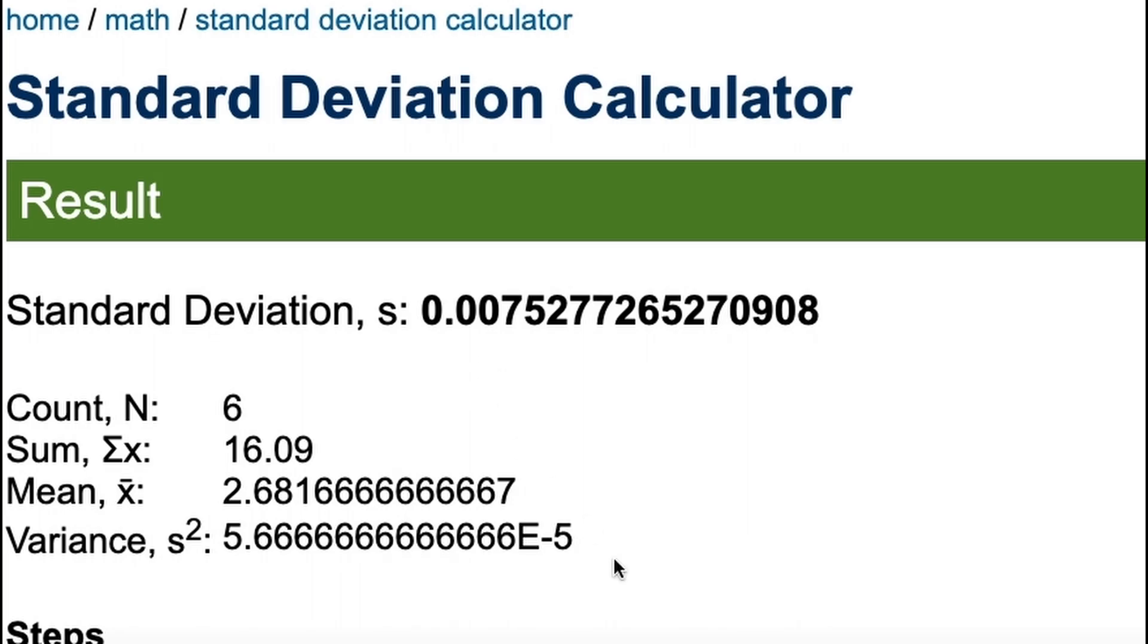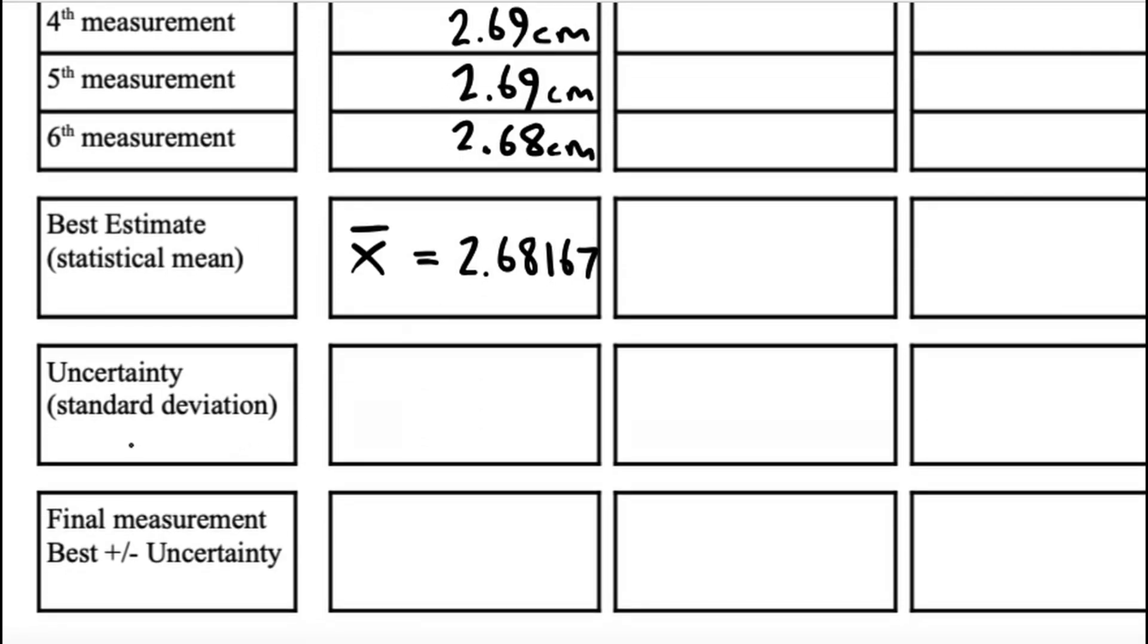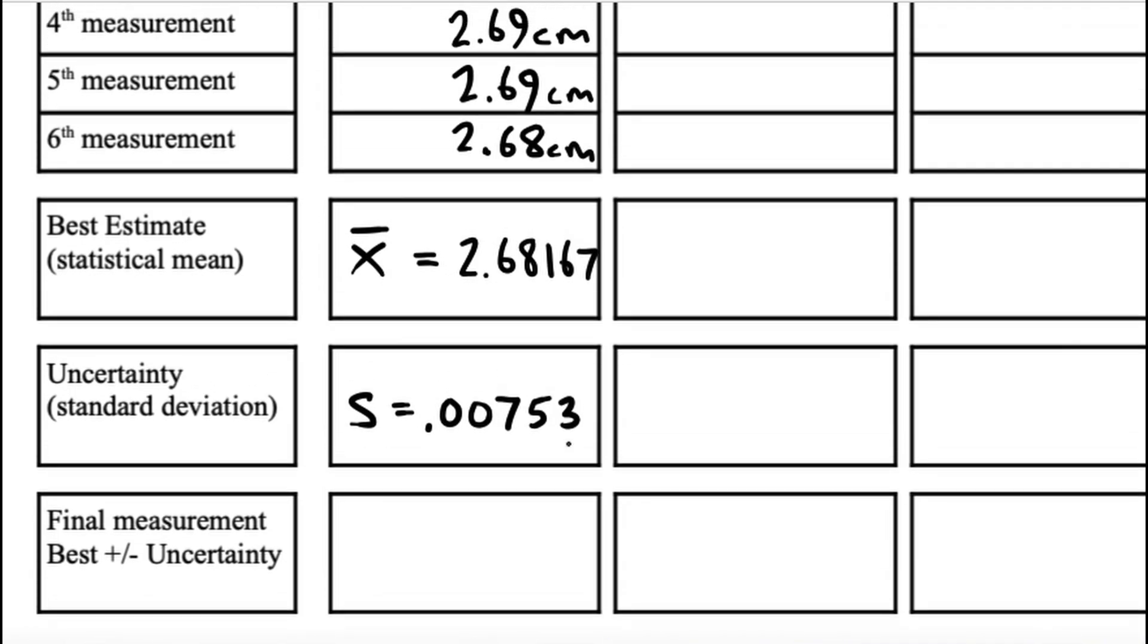So it's going to give you a few things. It's going to give you a mean, which is called x̄. That's going to be your best estimate. It's the average of the six. And it's also going to give you a thing called the standard deviation, which is a measure of how varied your measurements are. In my case for this PVC, there was not a whole lot of variety. They were very similar. So we see a very small standard deviation in that case. I'll transfer this over to my paper.